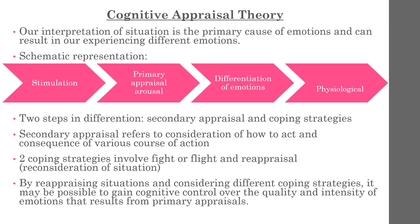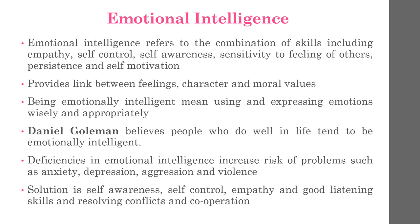Cognitive theory adds two further steps in the differentiation of emotion: secondary appraisal and coping strategies. Secondary appraisal refers to the consideration of how to act and the consequences of various courses of action. The second option is reappraisal — reconsideration of a situation, especially in light of new additional information not available when the emotion was initially experienced. By reappraising a situation and considering different coping strategies, it may be possible to gain cognitive control over the quality and intensity of the resulting emotion.